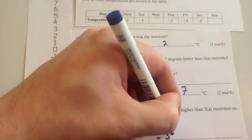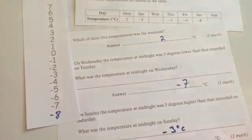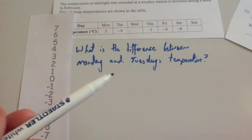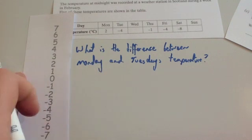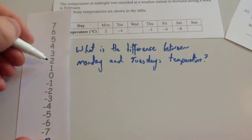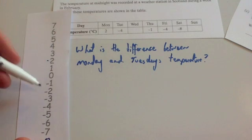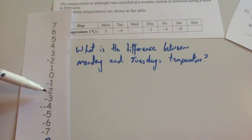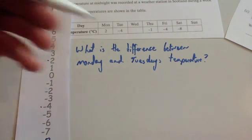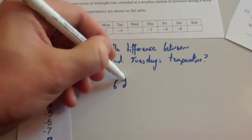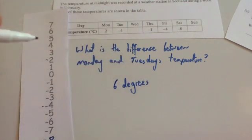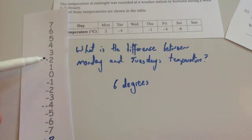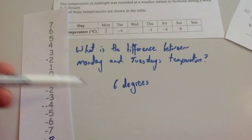One more question. What is the difference in temperature between Monday and Tuesday? Monday was two degrees and Tuesday was minus four. So counting down from two: one, two, three, four, five, six degrees. Give your answer as just the positive value — the difference is six degrees. Don't worry about writing minus six; the difference is six.